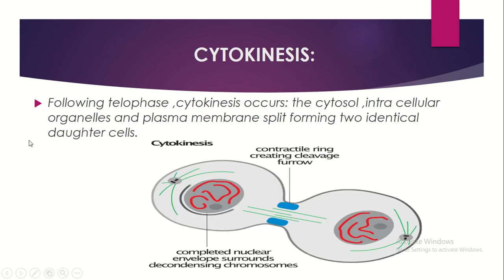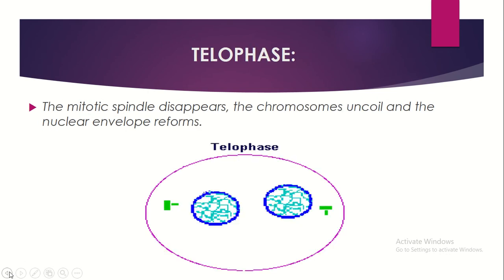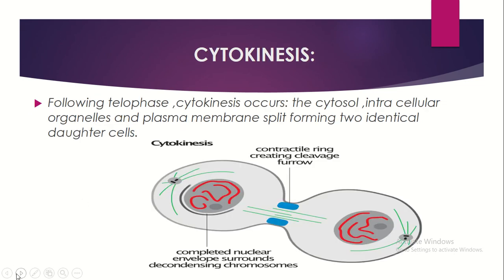Following telophase, cytokinesis occurs: the cytosol, intracellular organelles, and plasma membrane split, forming two identical daughter cells. A contractile ring creates a cleavage furrow, splitting the cell into two new identical daughter cells, each with 46 chromosomes. This completes the process of the cell cycle.